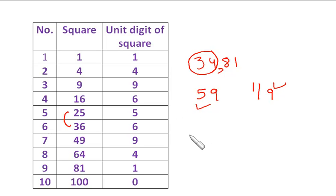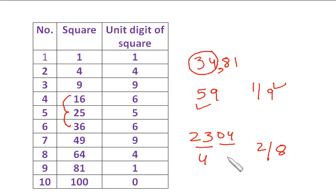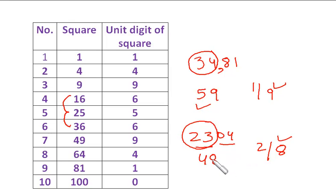Take 2304. Make the pairs: 04 and 23. Since 23 lies between squares of 4 (=16) and 5 (=25), the tens digit is 4. For the unit digit, the choices are 2 or 8. Multiply 4 by its next number: 4×5=20. Since 23 is bigger than 20, choose the bigger number: 8. So the square root of 2304 is 48.